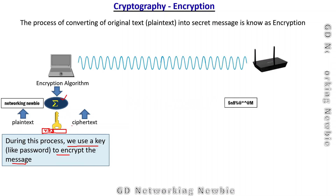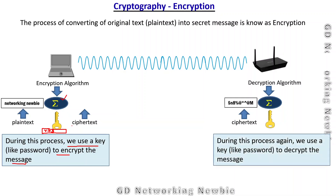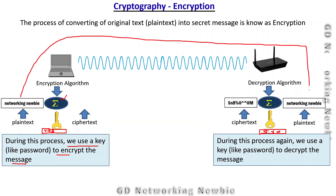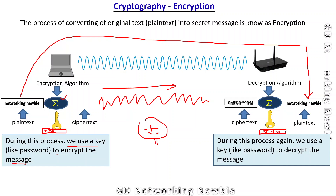This message is then sent to the destination. At the destination we have the inverse process of what we did at the transmitting end. We receive the ciphertext and apply the decryption algorithm. At this stage we also use a key — it may be the same one or a different one, we'll see later — again some string like 'xyz' or 'abc'. We use that key to decrypt the message and finally we get back the plain text — the actual message that was sent. When the message was transmitted, only the code was sent, so no third party could read it.